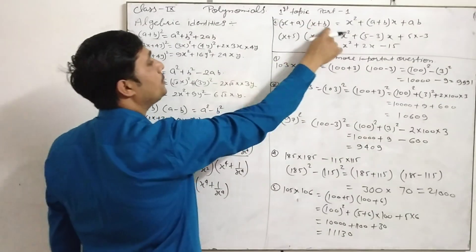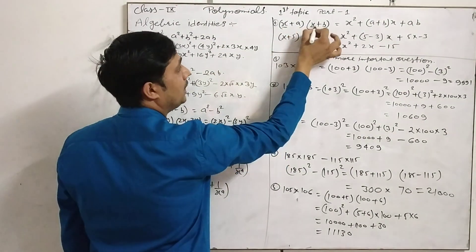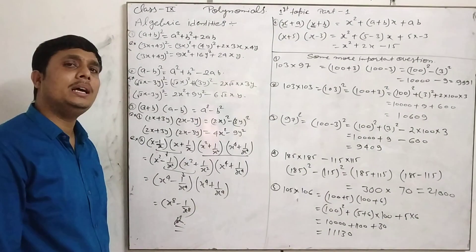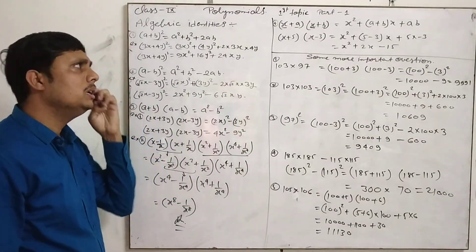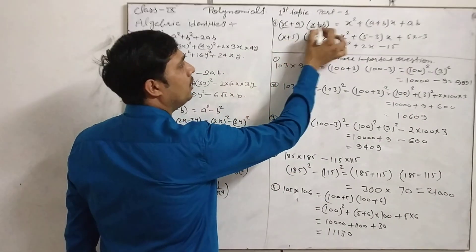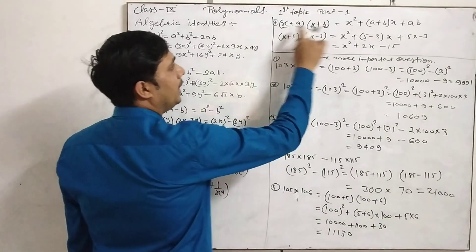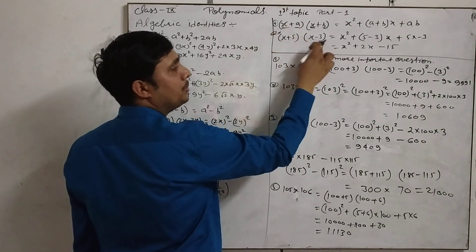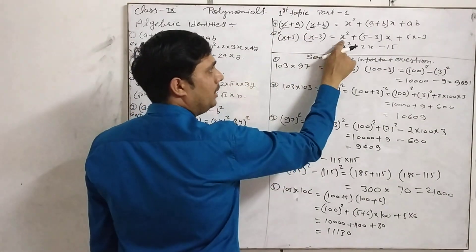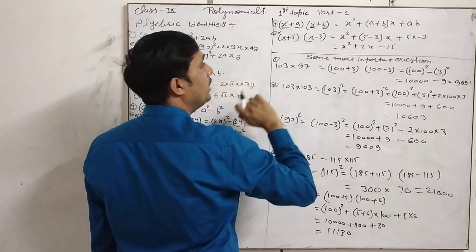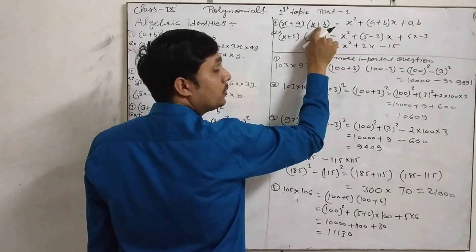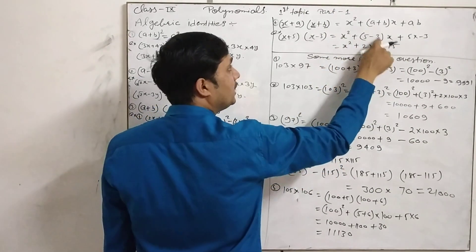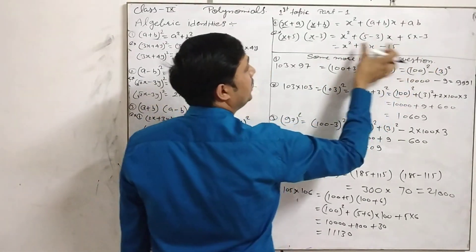The next formula is (x + a)(x + b). This formula is used when the first value in both brackets is the same but the other values are different. The sign will differ with a and b. The result is x² + (a + b)x + ab. For example, (x + 5)(x − 3): x is the same, a is 5 and b is −3, so the answer is x² + (5 − 3)x + (5×−3) = x² + 2x − 15.